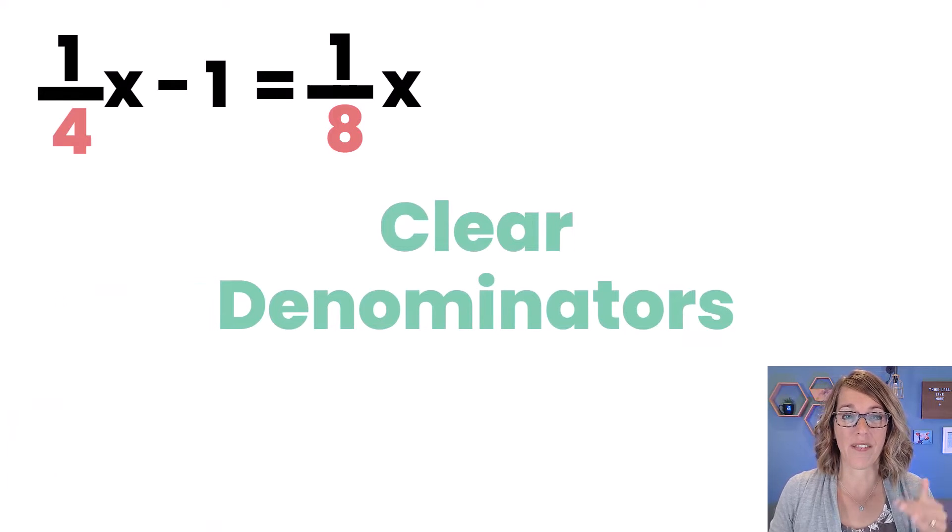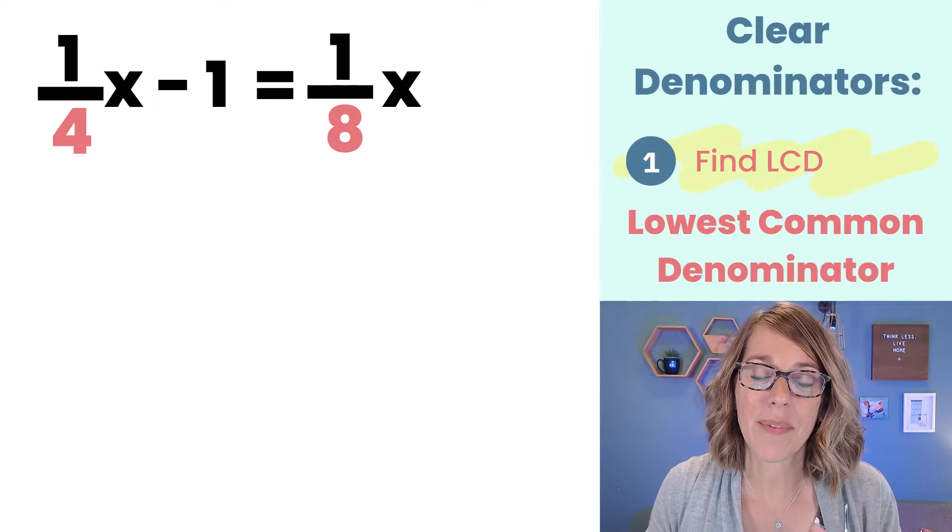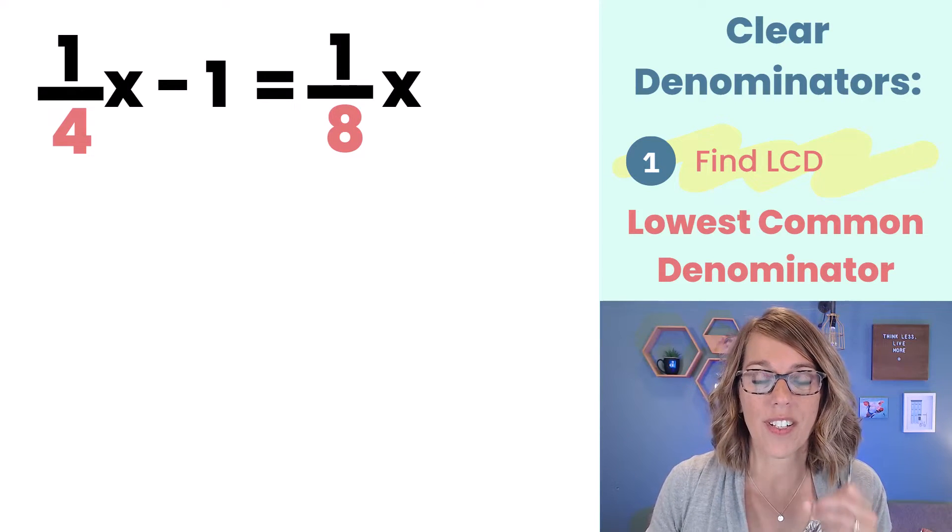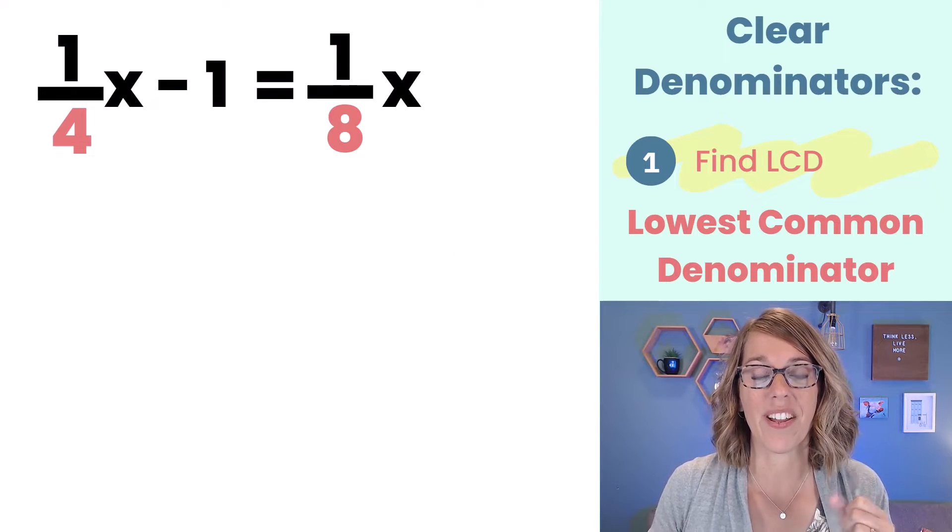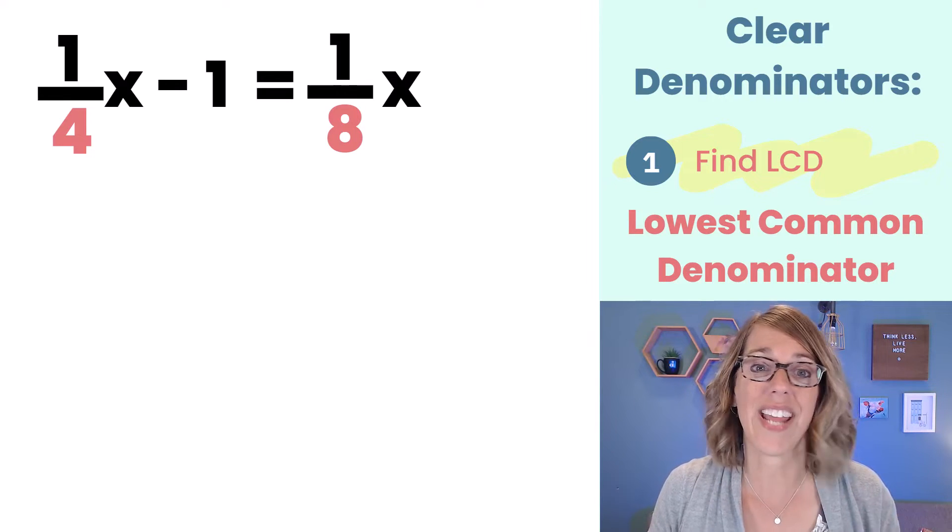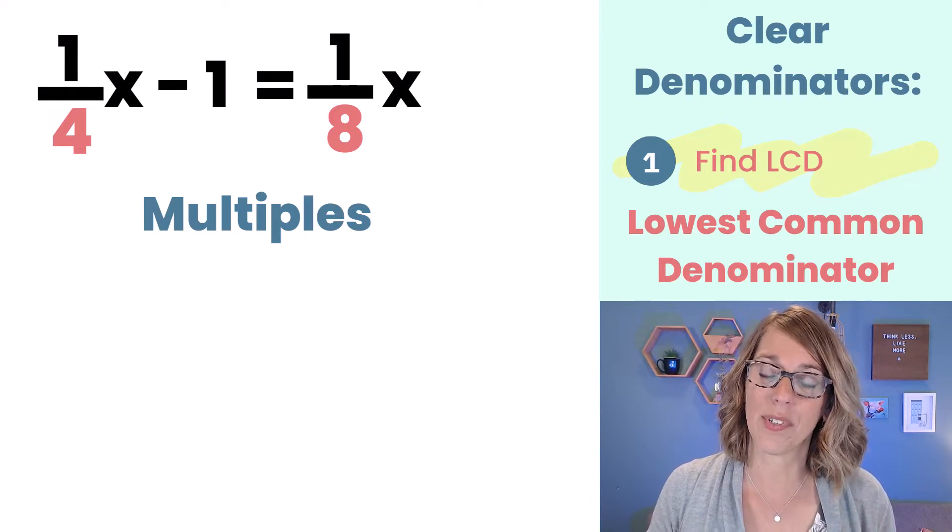In this first example I've got a denominator of four and of an eight. So we're going to clear denominators by first looking for their lowest common denominator. This is a number that both four and eight goes into and we can find it by listing their multiples.